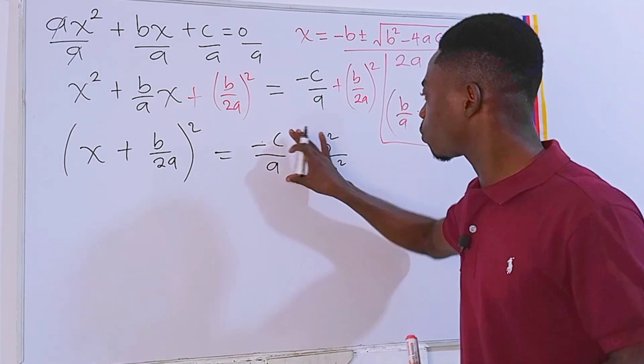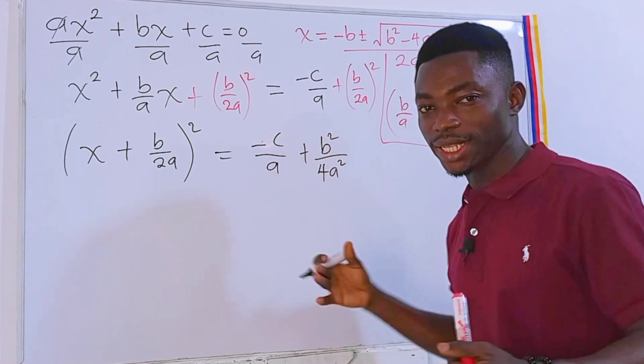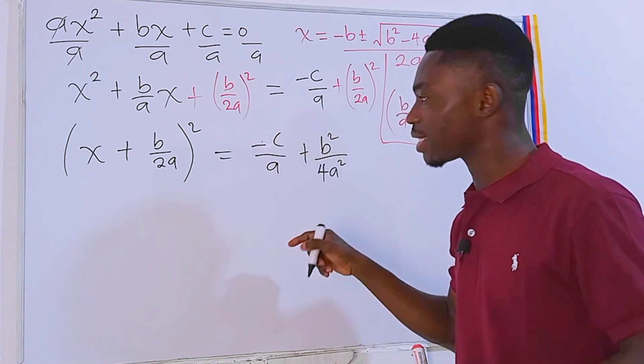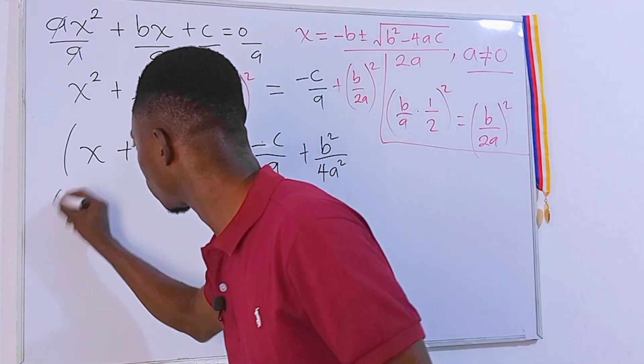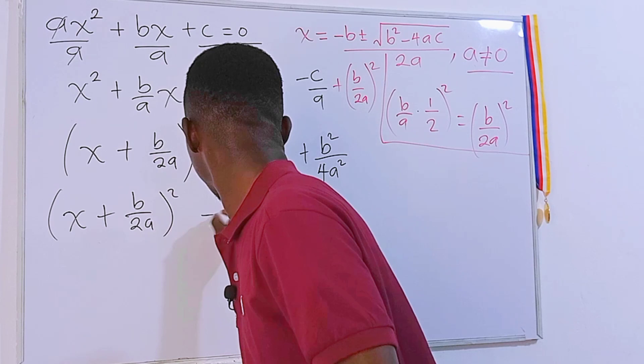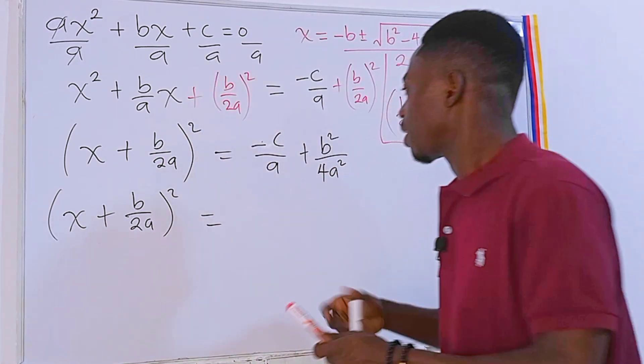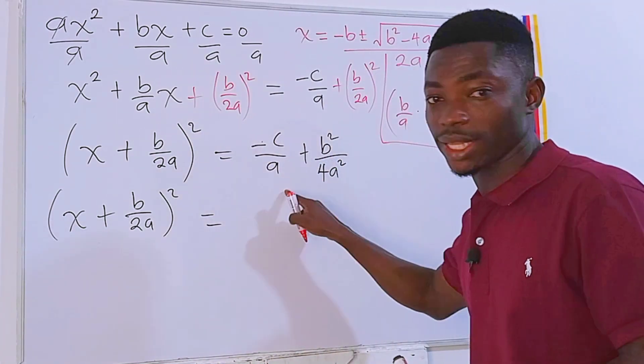Now we have two separate fractions. We can easily combine them if their denominators are the same. So what I will do is that I'll just keep the left hand side of the equation. Yes.